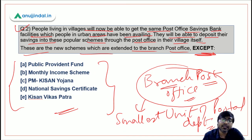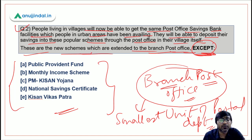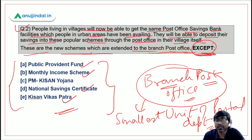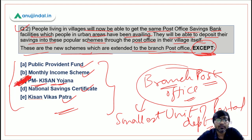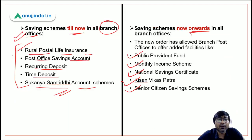The question asked which new schemes are extended to branch post offices except one. PPF is there, monthly income scheme is there, NSC is there, Kisan Vikas Patra is there, but PM Kisan Yojana is not there. Therefore the correct answer is option C.